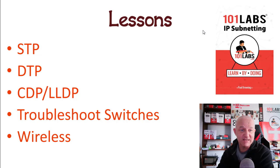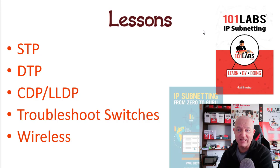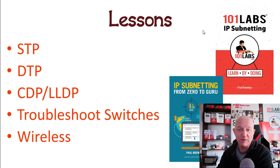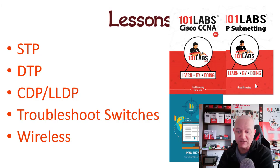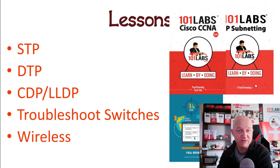If you want to do some extra subnetting, I recommend you go to Amazon. There's the 101 Labs book for IP subnetting, there's a book called IP Subnetting from Zero to Guru on Amazon, and also version 4 of the Cisco CCNA 101 Labs book. These are things that just help — obviously not compulsory, but they give you an extra boost of information and knowledge for the exam.